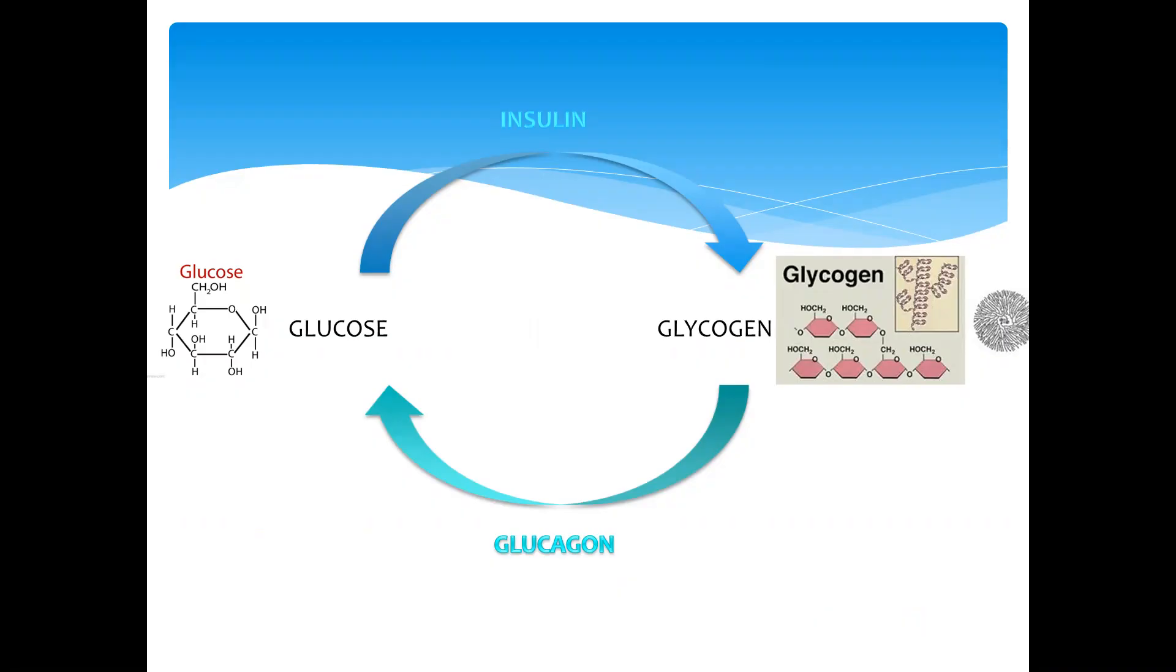Glycogen is the stored form of glucose, and when glucose levels are low, we can have glycogen being converted back to glucose by the hormone known as glucagon.